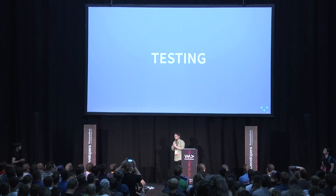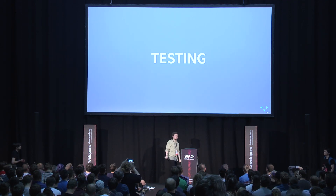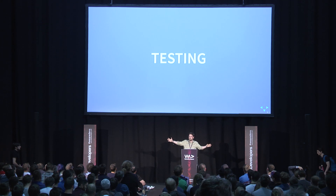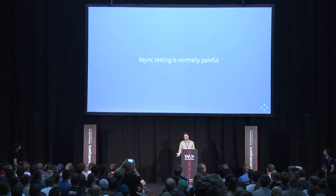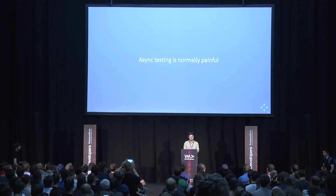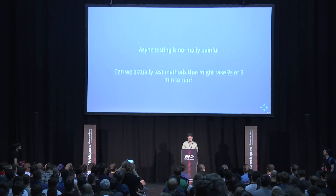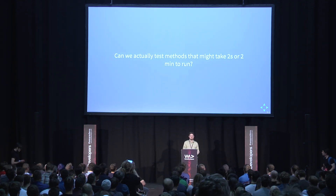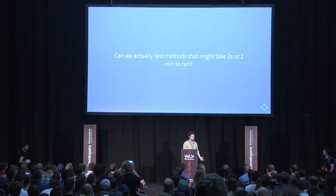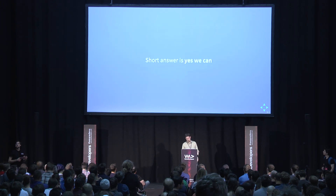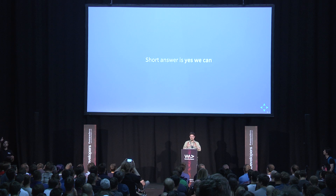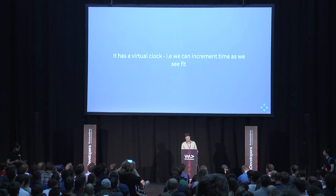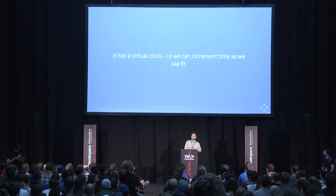Now, testing. When testing async we tend to mock it away and treat it as synchronous — that's why we have async/await. RxJS is quite nice for testing, though testing is still painful. Can we test methods that might take two seconds or two minutes? We don't want a test suite to take half an hour. The answer is yes — it's called marble testing. Marble testing has an internal virtual clock, meaning we control time: two seconds in your algorithm is two milliseconds in your test.